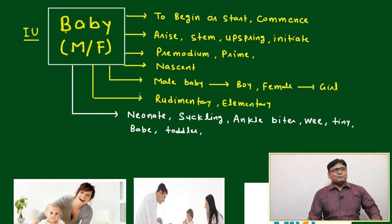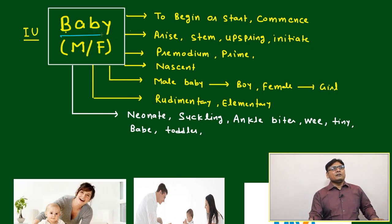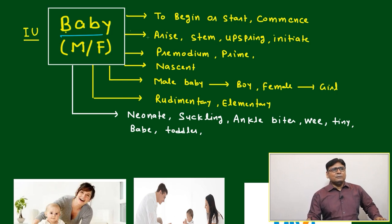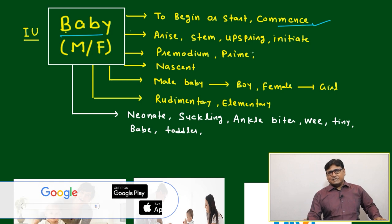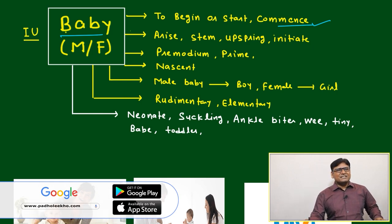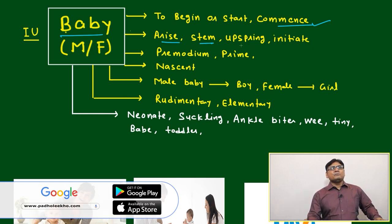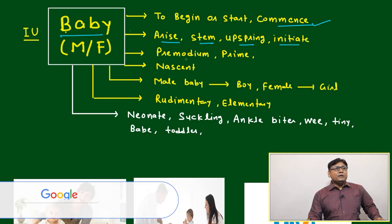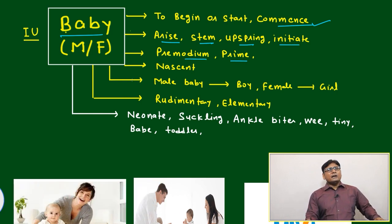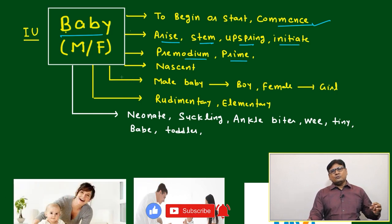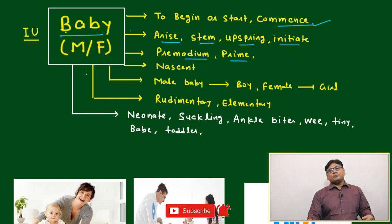Once after taking birth, the baby starts to grow — we call it a boy baby or girl baby, male or female. To begin, to start: commence, commencing is a start. Arise, stem, spring, initiate, primordium, prime — all are related to just beginning, just starting.